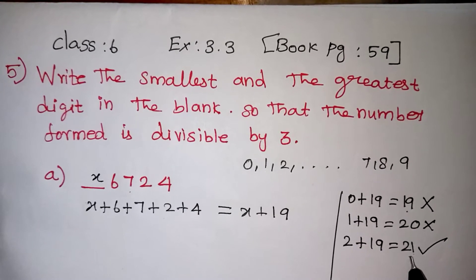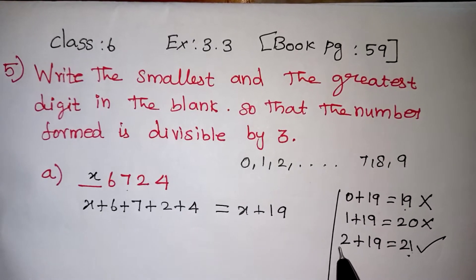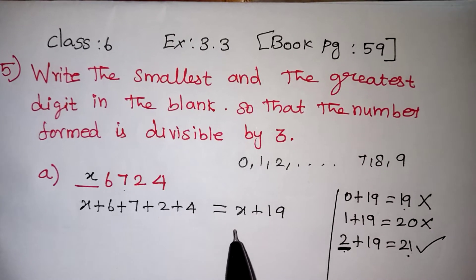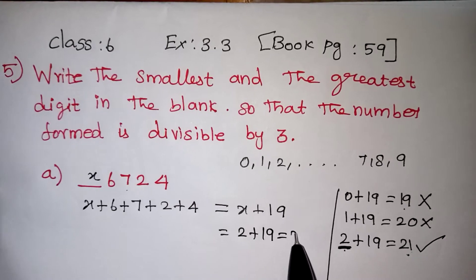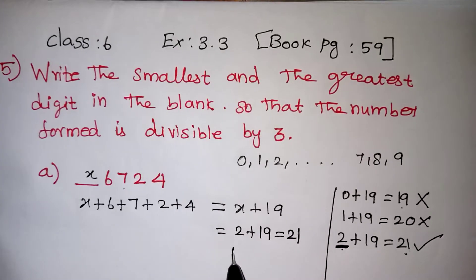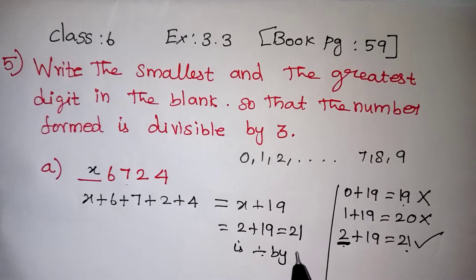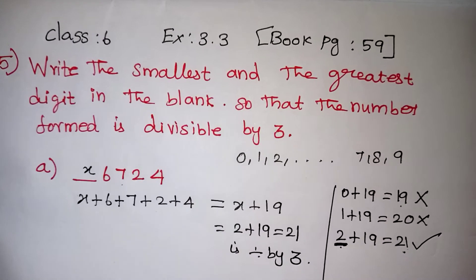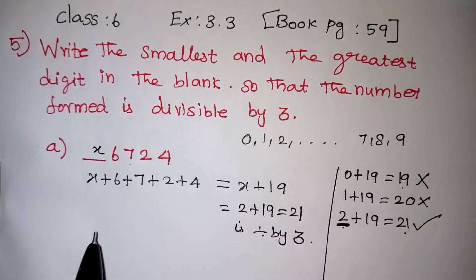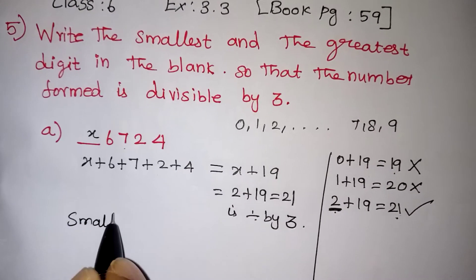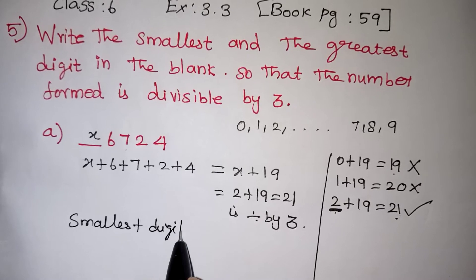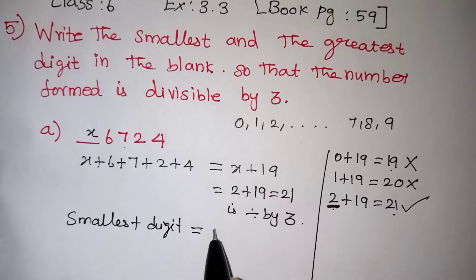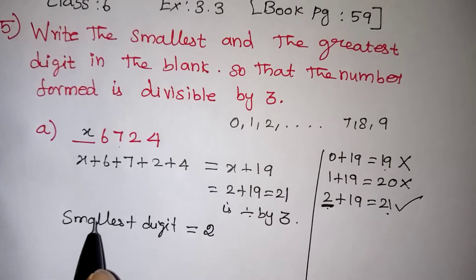So 21 is divisible by 3, so what can be filled in this place? We have to write 2, because 2 plus 19 will give you 21 which is divisible by 3. So the smallest digit that can be filled in this place is 2.